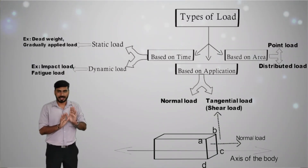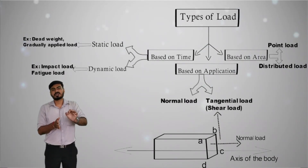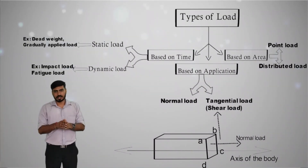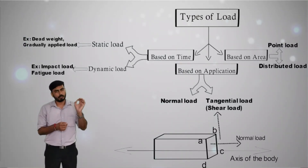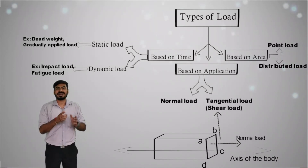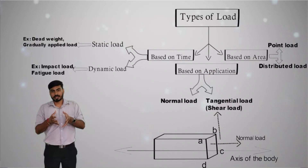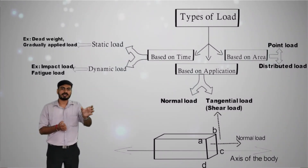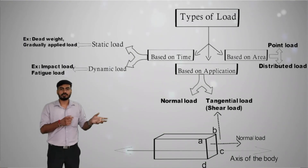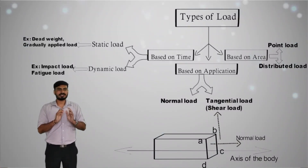Now consider a small elemental area — just enough for the person to stand on. For that small reference area, the person's weight is distributed over the entire area rather than at a single point. In this case, the load is considered a distributed load. So, depending on your reference, the same weight can be a point load or a distributed load, and the calculation method differs accordingly.